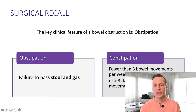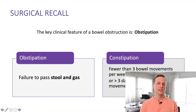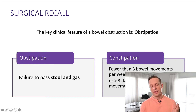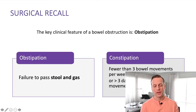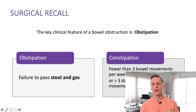The key feature of a bowel obstruction is the concept of obstipation, defined as the failure to pass gas and stool. That's opposed to constipation, which is the failure to pass stool while still passing gas, occurring less than three bowel movements per week or more than three days between a bowel movement. Obstipation doesn't have a specific time course — typically 12 hours would be the minimum, but you may find 24 hours or another definition used.